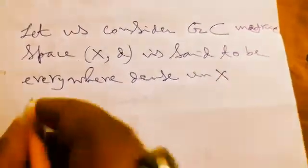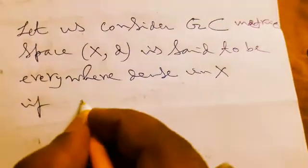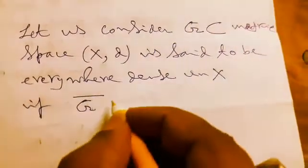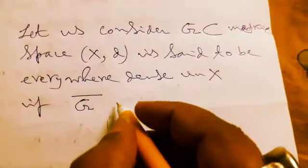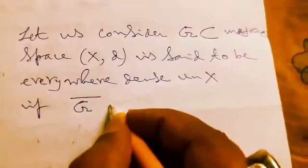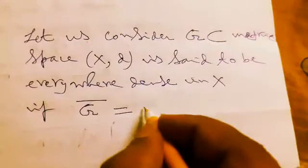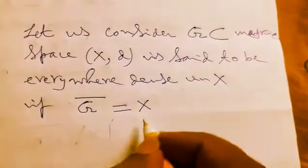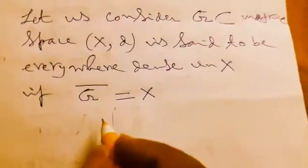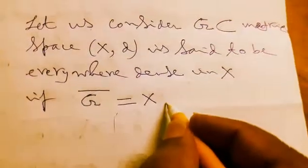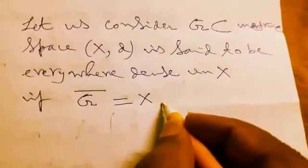if G bar, or closure of G—that means bar notation is used for closure of G—is equals to total X, where bar denotes the closure of G.